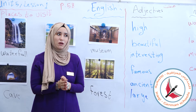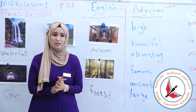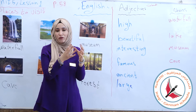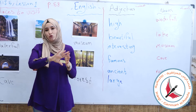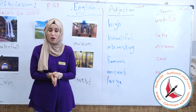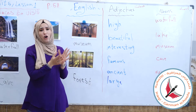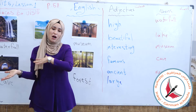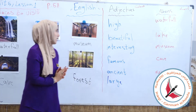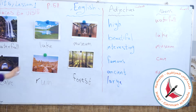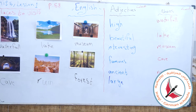For example, we have a house. We want to describe this house — what are its features? We can say: old house, big house, small house, new house. These descriptions are adjectives. Adjectives describe these things, these places.